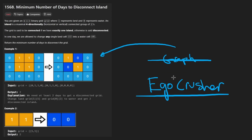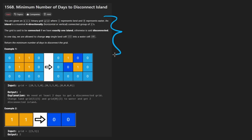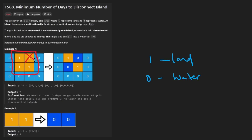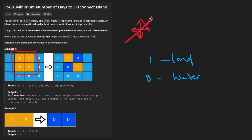Going through the description: we're given a binary matrix where ones are land and zeros are water, similar to many other problems. We want to know the minimum number of cells we could remove such that we're left with either greater than one island. In this example we have one island - a contiguous block connected up, down, left, right, not diagonally - and it takes two removals to split it.